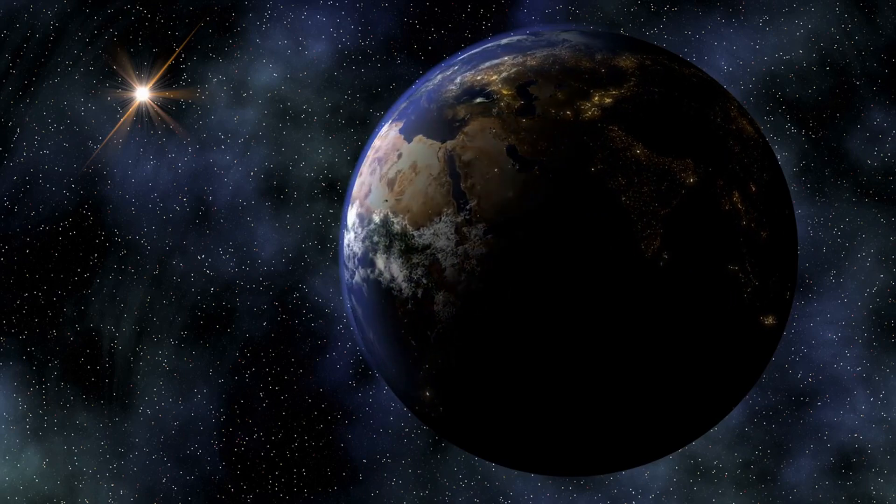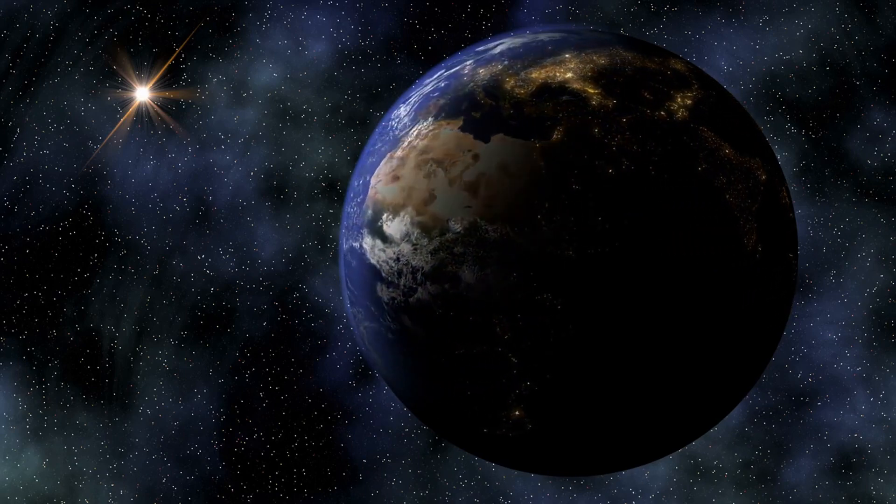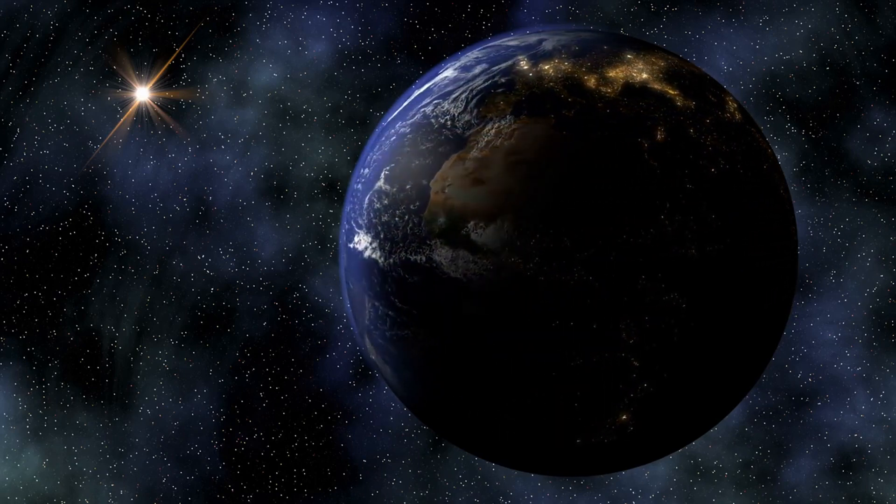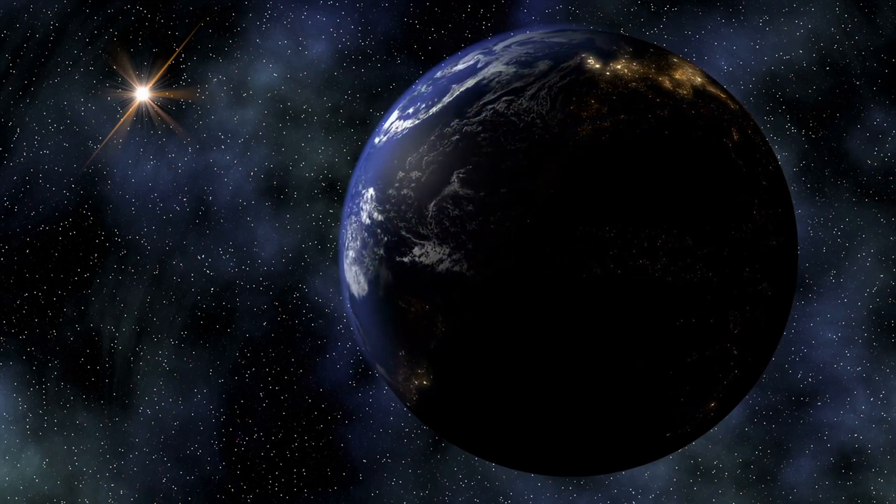Solar rotation takes approximately 27 days at the equator of the sun, but it can take up to 35 days at the poles. This uneven rotation is due to a phenomenon known as differential rotation.